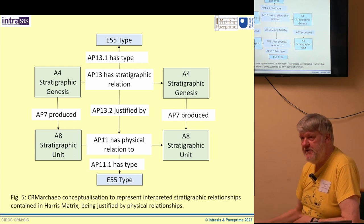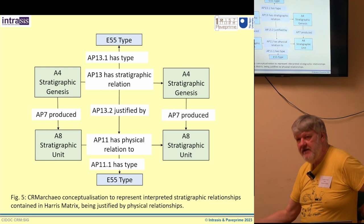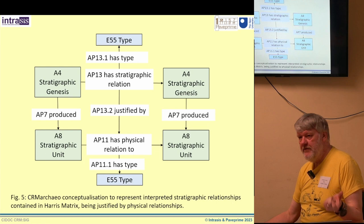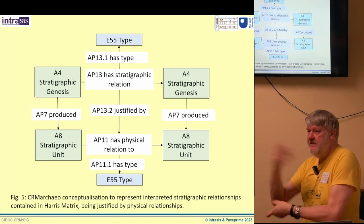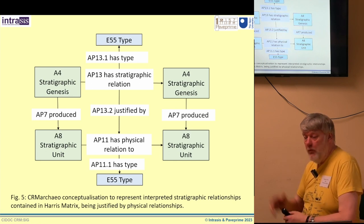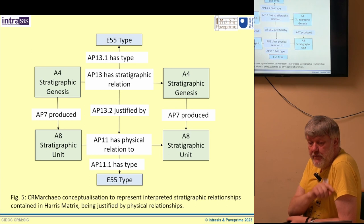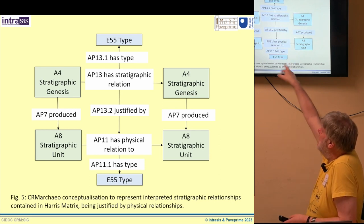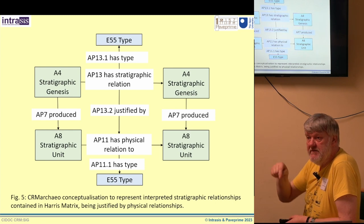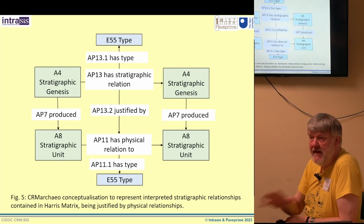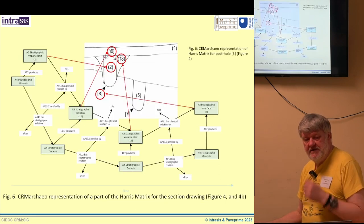You can say you dug it wrong, or you interpreted it wrong, or the dating's come back, the pollens have come back, the ceramics have come back, and it means that what we thought was the cut that went through the cut is actually the other way around. All of those things which are really difficult to do. The way we do this is we have a relationship between the property that links the stratigraphic sequence with the property that links the physical relationships — this is AP 13.2 'justified by.' So I'm saying: I believe this is the sequence because I saw this. And that's the fundamental building block.